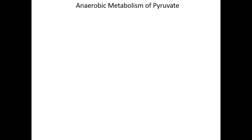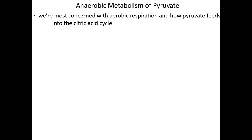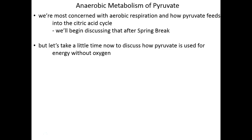Now that we understand how we can regulate glycolysis, let's talk about what the cell can do with pyruvate when it's not needed for aerobic metabolism. Everything we've talked about so far has been preparation for aerobic metabolism, and everything moving forward — the creation of acetyl-CoA, the citric acid cycle, and oxidative phosphorylation — will be aerobic respiration as well, requiring oxygen as the final electron acceptor. We'll pick up with the citric acid cycle after spring break in Lecture 13. Let's take some time now to talk about anaerobic respiration: what happens to pyruvate when oxygen levels are low?